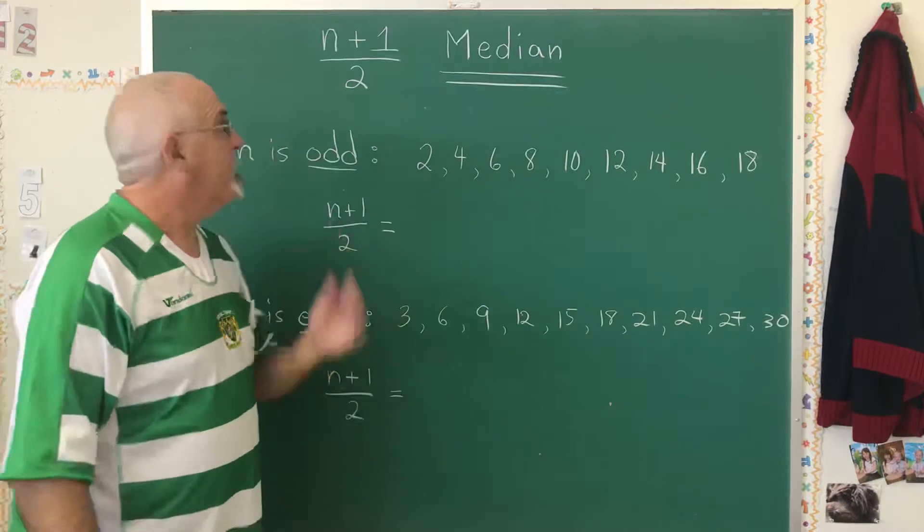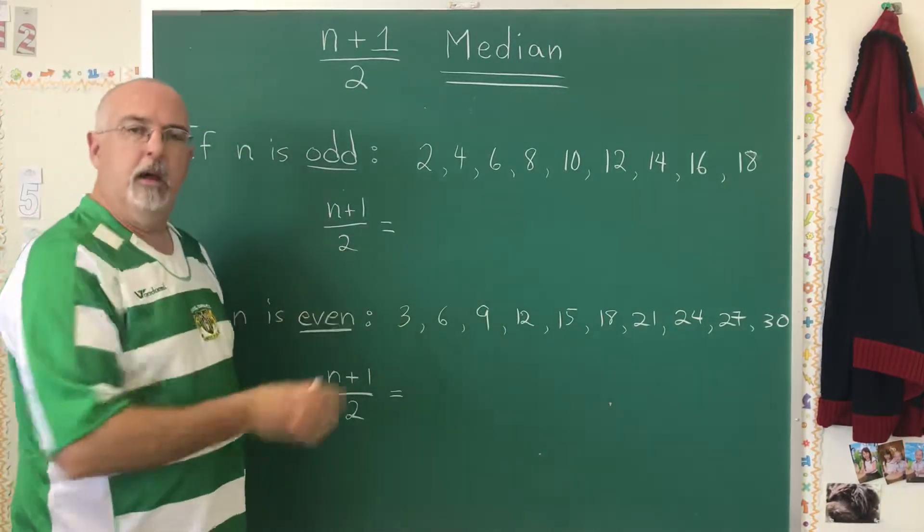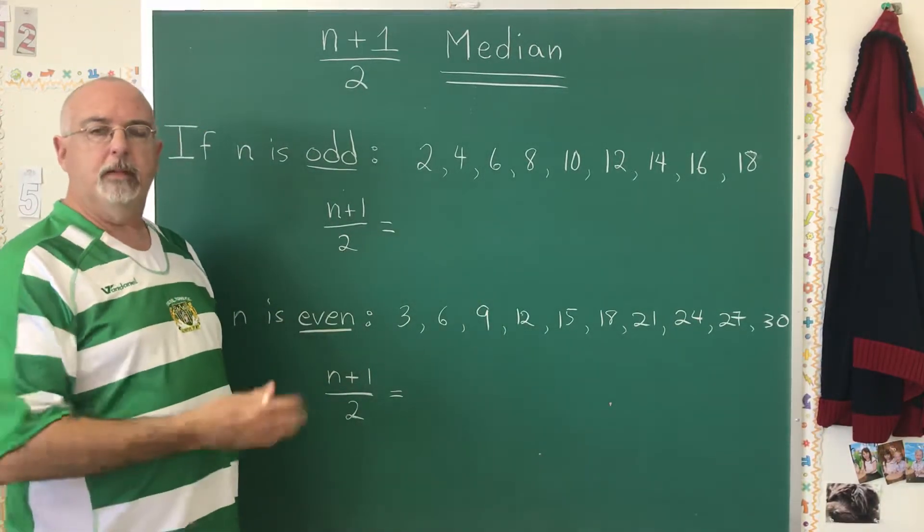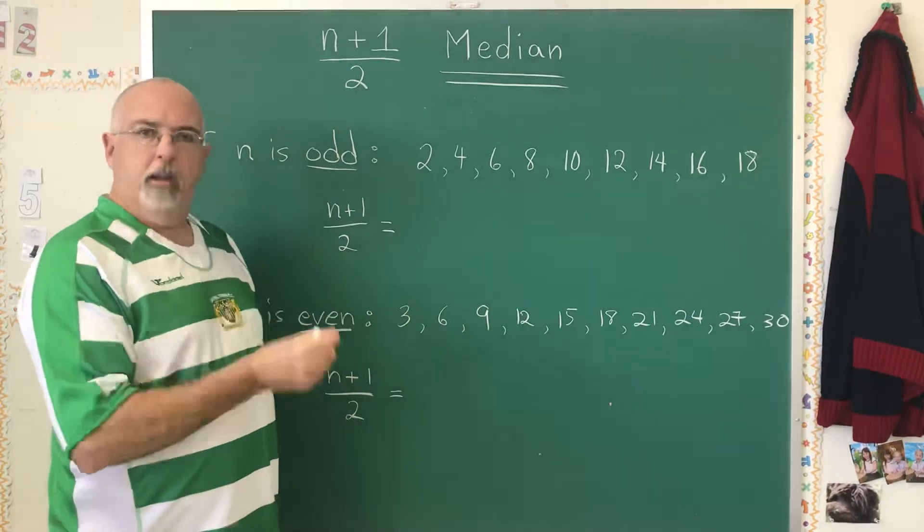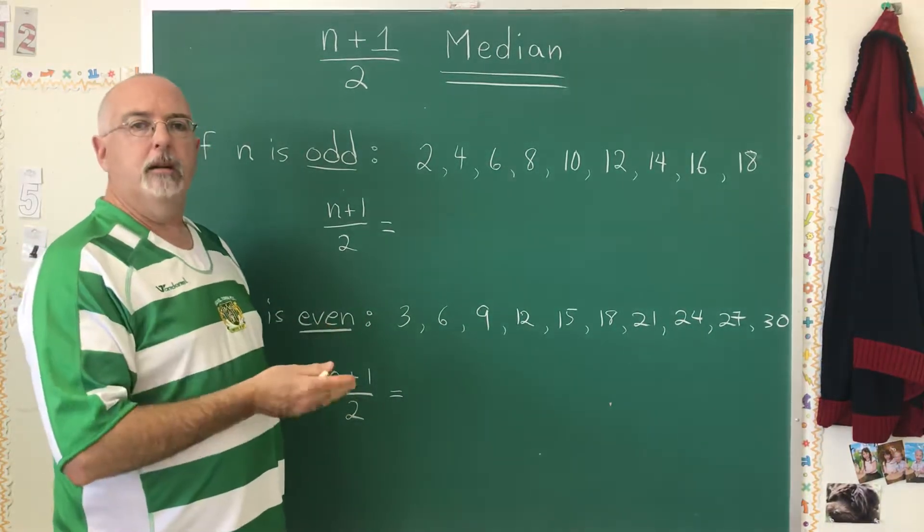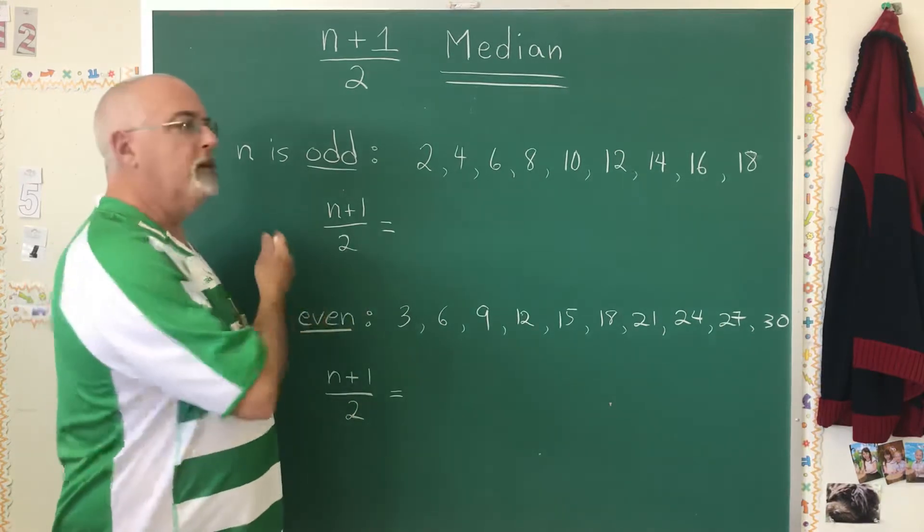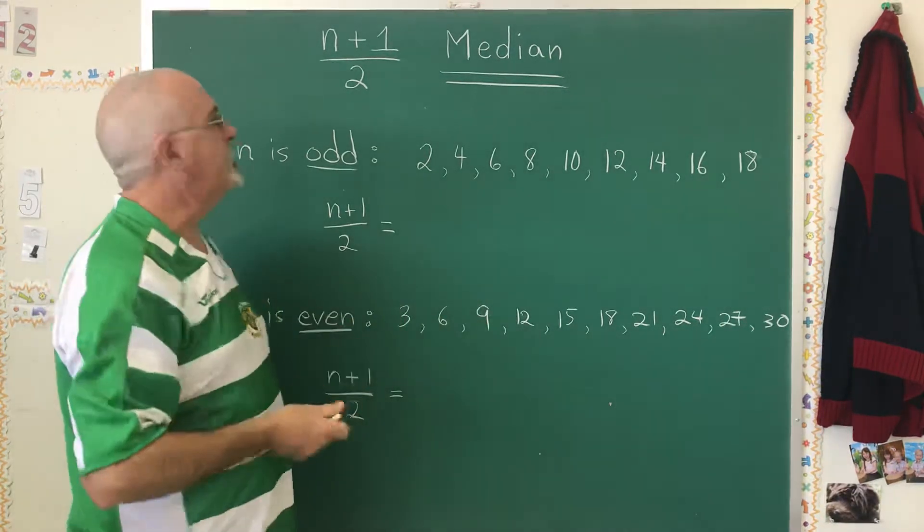In today's Daily Dose of Math, we're looking at the median, which is the middle value of a set of data. It would land right in the middle only if the data is listed going from smallest to largest or vice versa.